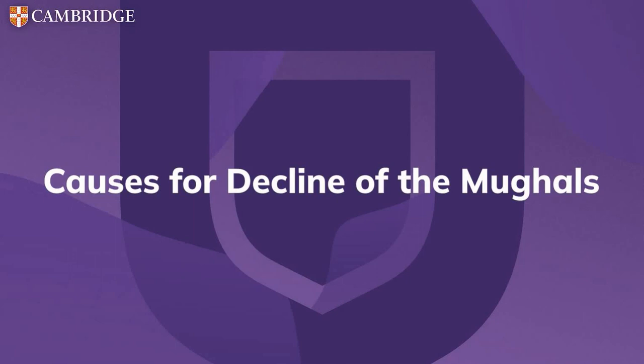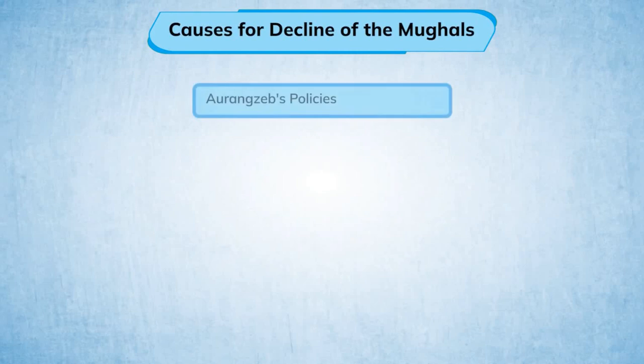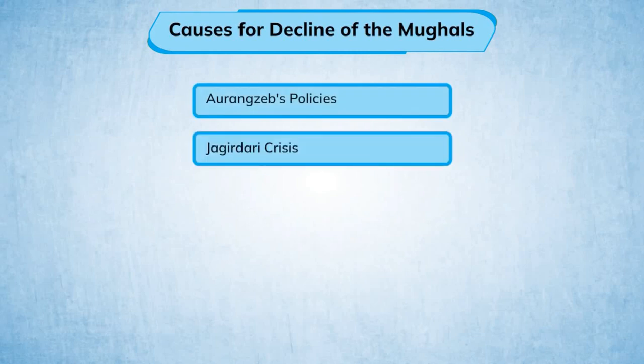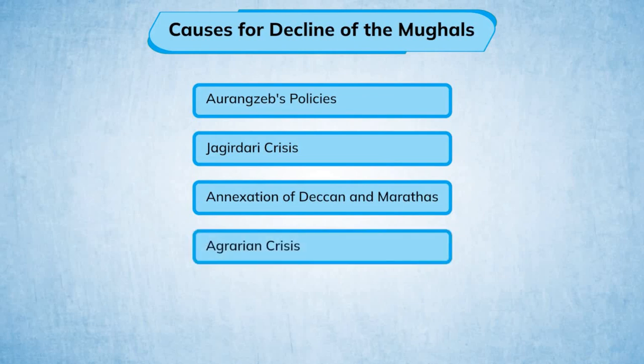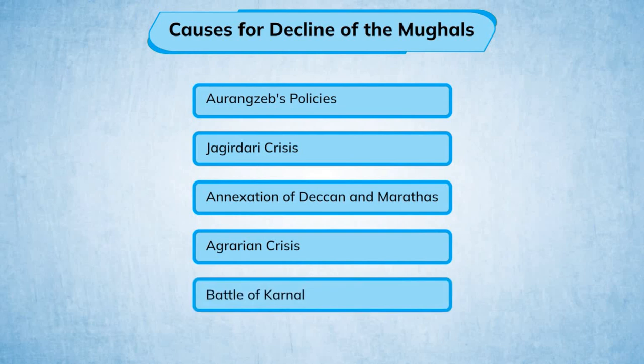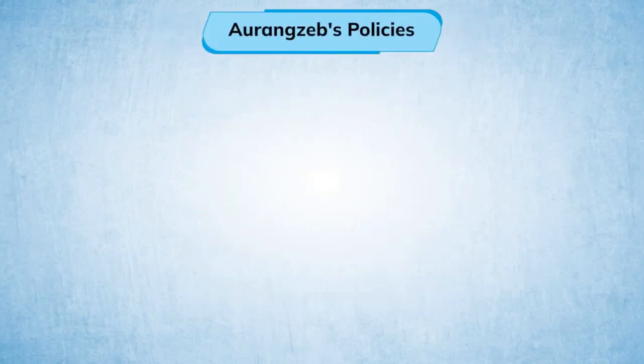The decline of the Mughals covers: Aurangzeb's policies, the Jagirdari crisis, annexation of Deccan and Marathas, agrarian crisis, and the Battle of Karnal.